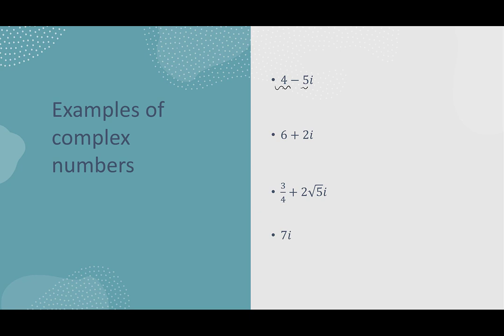Each complex number has a real part and an imaginary part. For 4 minus 5i, the real part is 4 and the imaginary part is negative 5i. For 6 plus 2i, 6 is the real part and 2 is the imaginary part. For three-fourths plus 2 square root of 5i, three-fourths is the real part and 2 square root of 5 is the imaginary part. With 7i, there isn't an explicit a, but you could put a 0 there — real part 0, imaginary part 7.